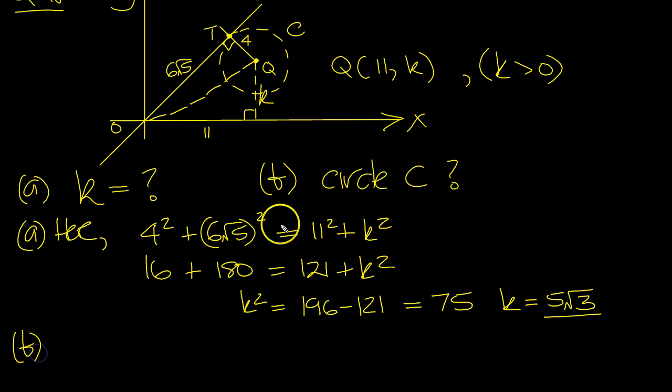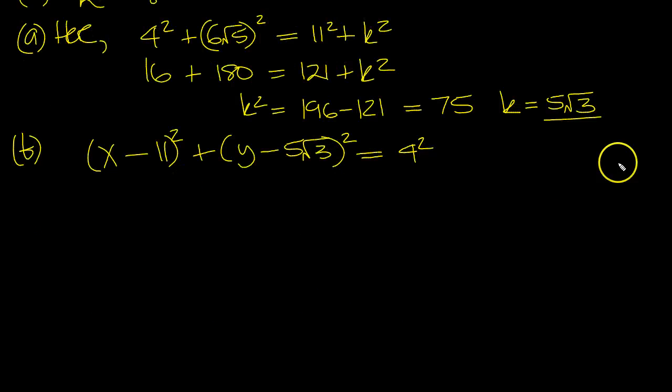the circle c now. So k is 5 root 3. So x minus the x value at the centre, plus y minus 5 root 3, is equal to the radius squared, 4 squared.